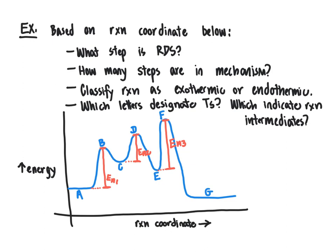Step 3 is the rate-determining step because it has the highest energy requirement to overcome to get to the next intermediate or product. For the number of steps in the mechanism: we can tell by counting the energy maxima along the curve. Our curve has energy maxima at three points — here, here, and here — therefore there must be three steps in the mechanism.